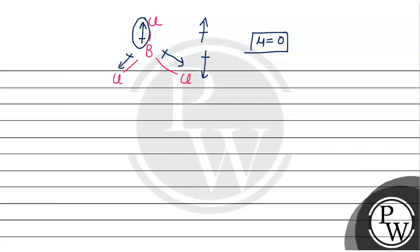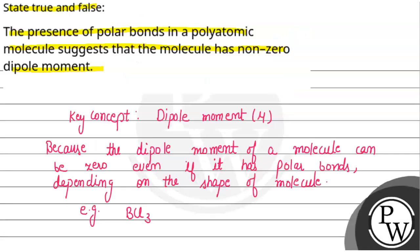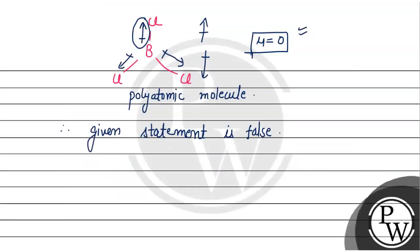Equal and opposite होने की वजह से यह cancel out कर रहे हैं एक दूसरे को, जिसकी वजह से net dipole moment zero है. तो यहाँ polyatomic molecule है जिसके पास polar bonds हैं, लेकिन फिर भी dipole moment zero है — due to the shape of the molecule. Therefore, the given statement is false. So hope you understand.